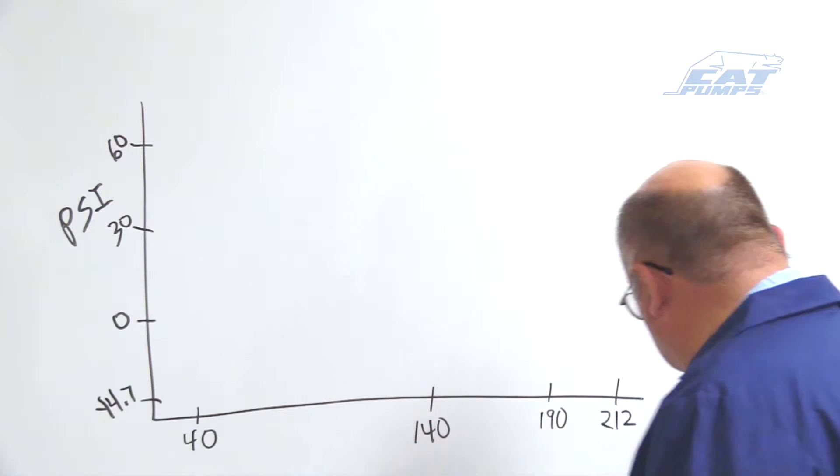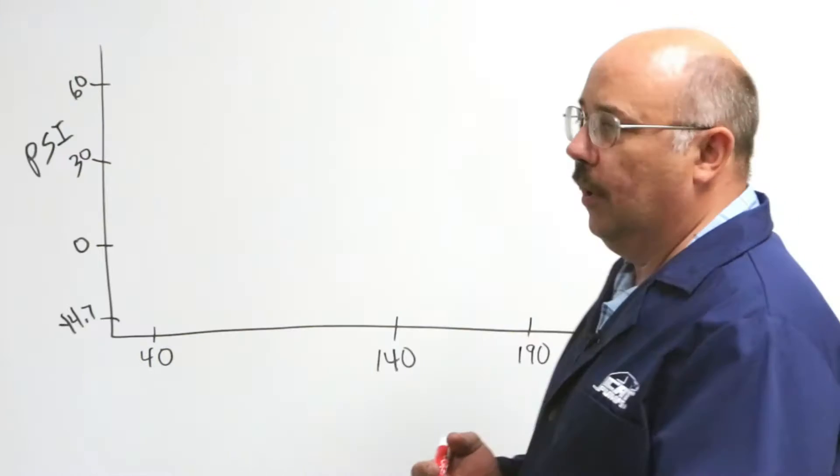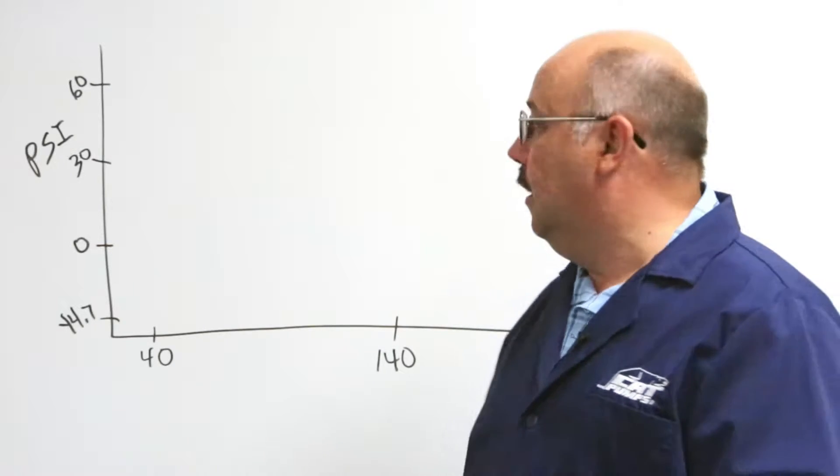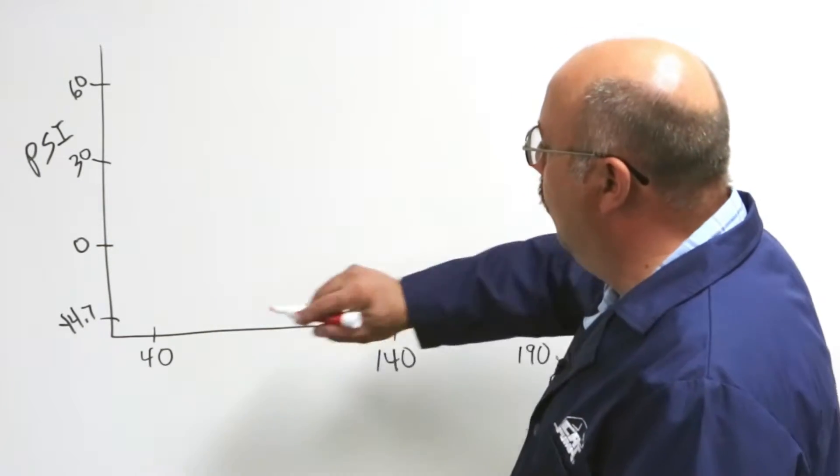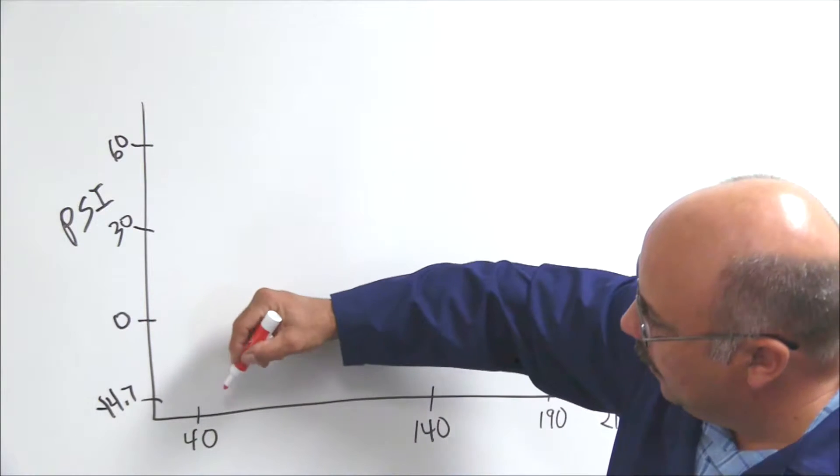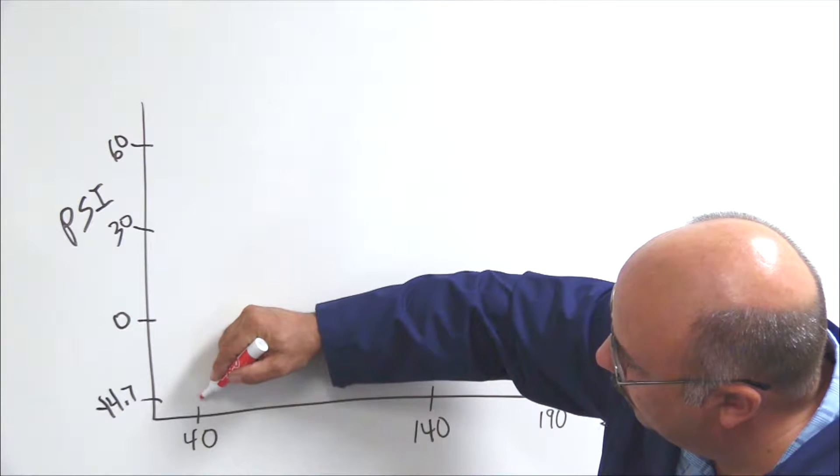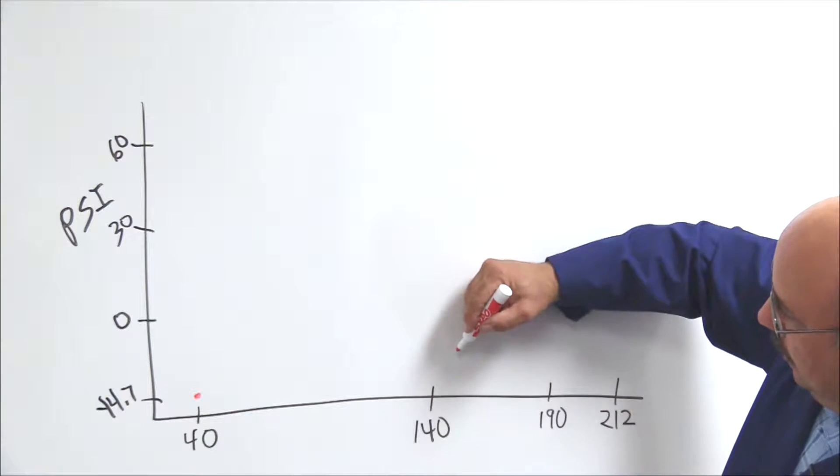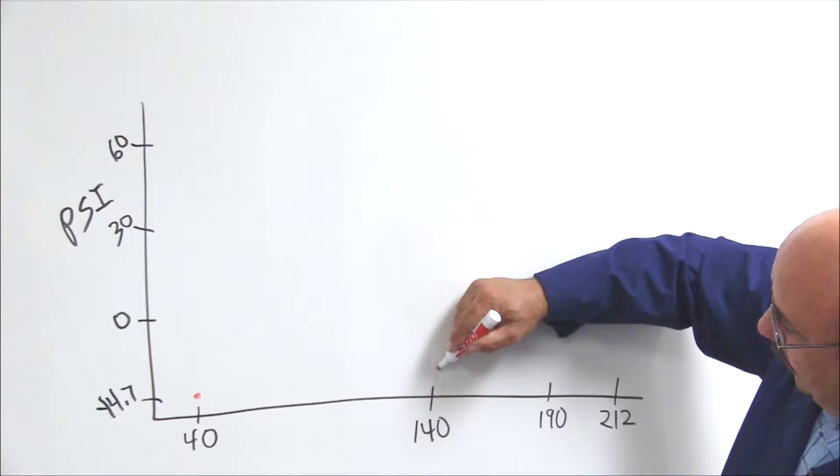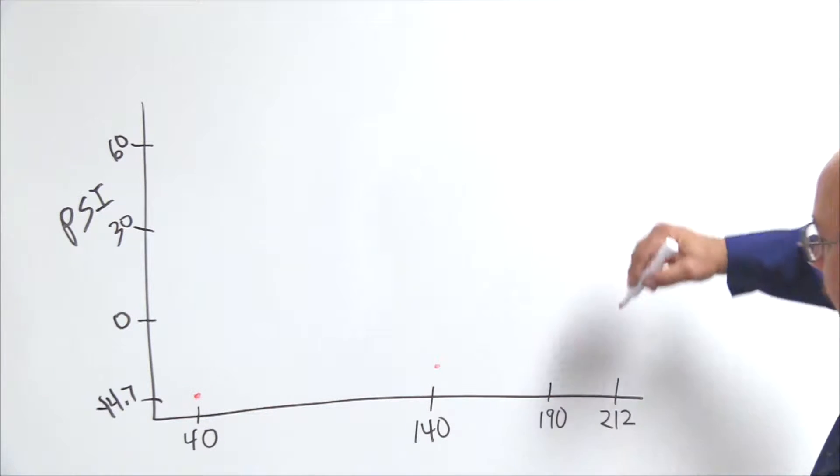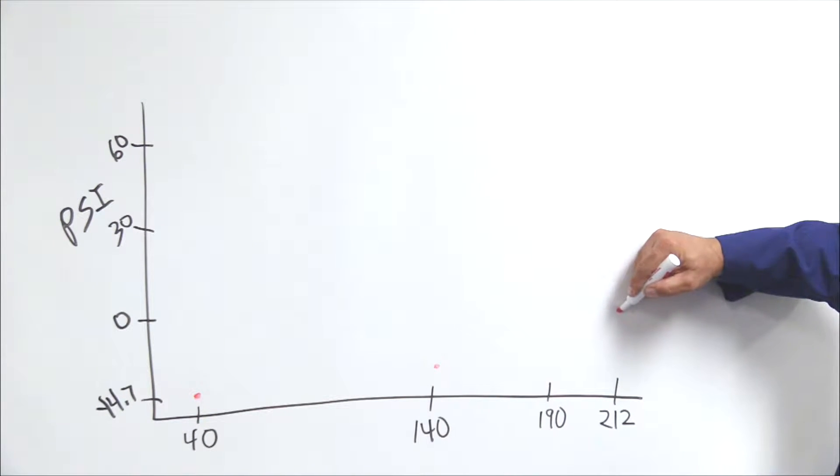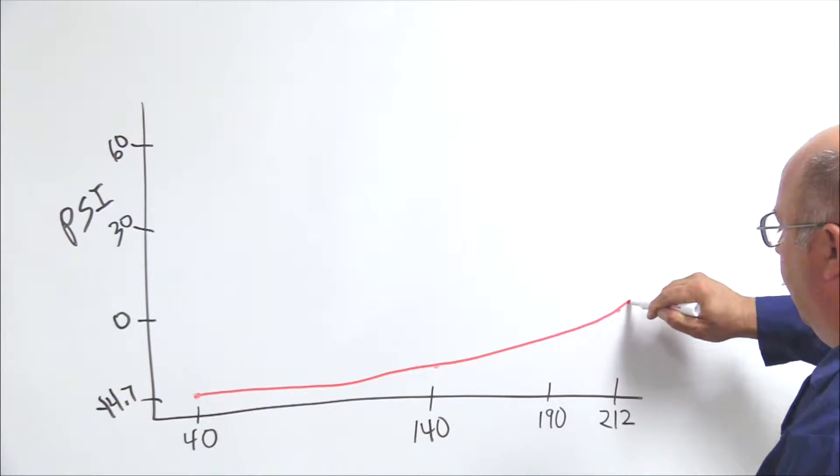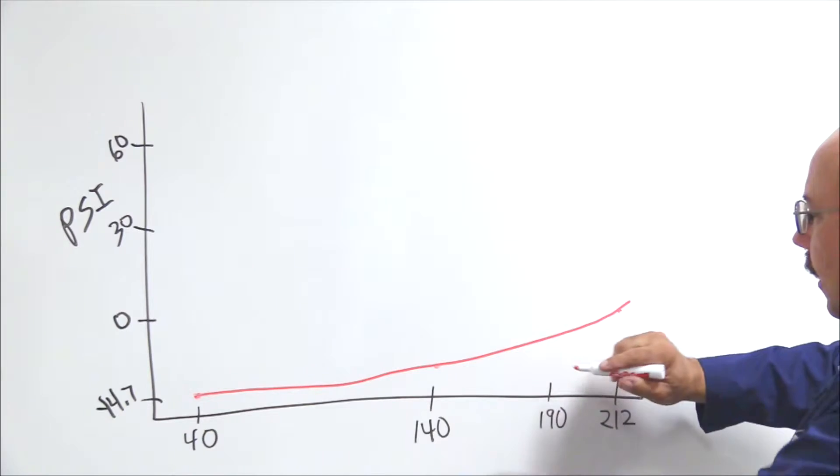And when we start talking about water, water as a liquid is dependent upon its temperature and pressure. So we have to look at both characteristics when we're talking about water. Well down at 40 degrees it's still a liquid way down at almost a perfect vacuum. At 140 it's around minus 10 psi is where the vapor line is. And at 212 it's at 0. So I'm going to draw this line. And everything below the line is vapor.